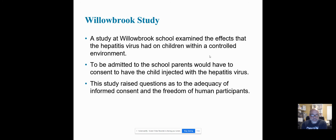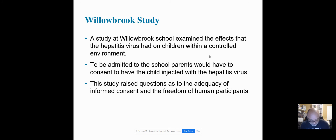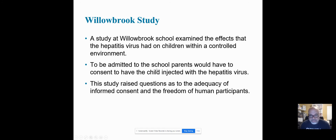The Willowbrook study was another one where they wanted to see the effects the hepatitis virus had on children in a controlled environment. To be admitted to the school, the parents would have to consent to have the child injected with the hepatitis virus. This study raised questions as to the adequacy of informed consent and the freedom of human participants. In other words, if you want to take your kid to this school, they're going to tell you your child is going to have to take the hepatitis virus — arguing that all the kids have hepatitis anyway. Disclosure was a big issue with this case.